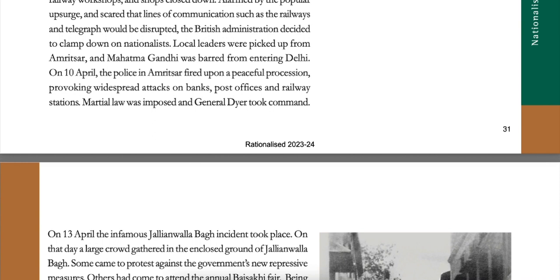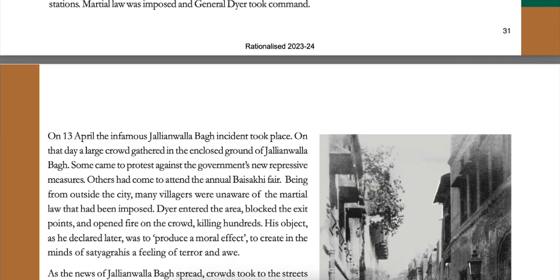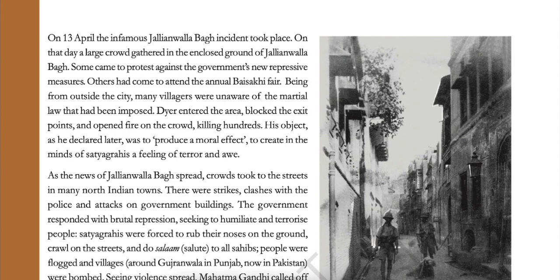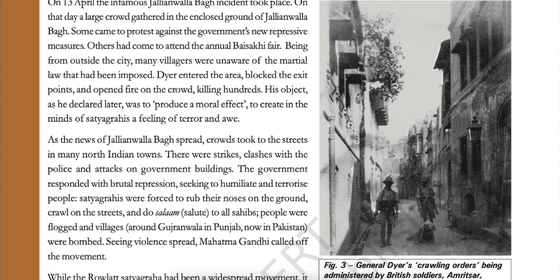Alarmed by the popular upsurge, the British administration decided to clamp down on nationalists. Local leaders were picked up from Amritsar and Mahatma Gandhi was barred from entering Delhi. On 10 April, the police in Amritsar fired upon a peaceful procession, provoking widespread attacks on banks, post offices and railway stations. Martial law was imposed and General Dyer took command. On 13 April, the infamous Jallianwala Bagh incident took place. A large crowd had gathered in the enclosed ground of Jallianwala Bagh — some came to protest against the government's repressive measures, others had come to attend the annual Baisakhi fair. Many villagers from outside the city were unaware of the martial law that had been imposed.